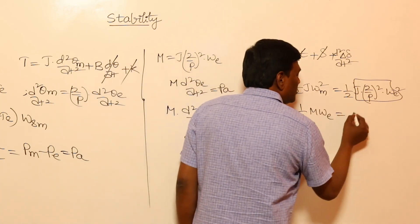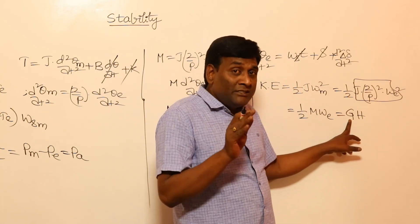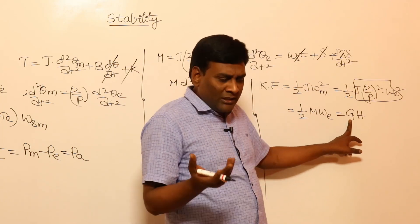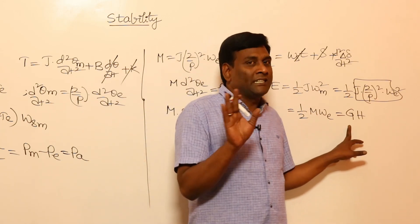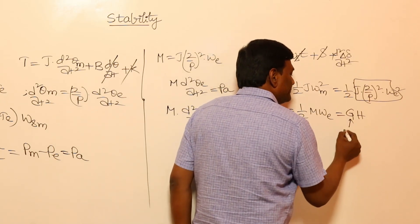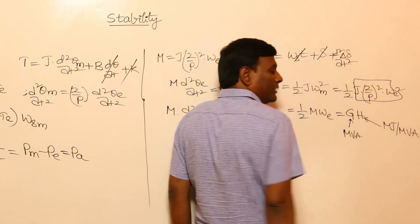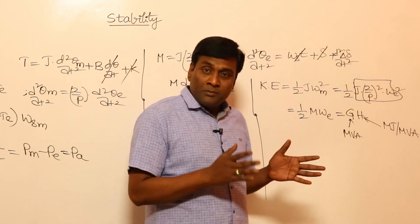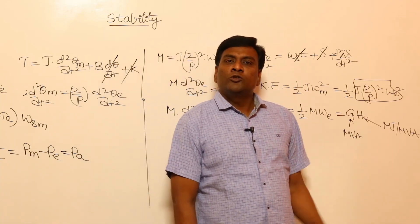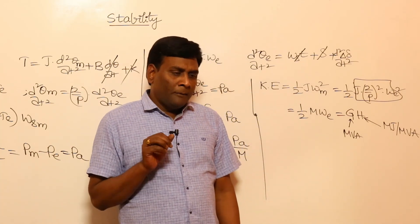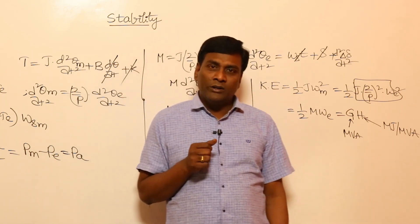G is the machine rating in MVA, and H has units of mega joules per MVA. Many textbooks use G instead of S for MVA rating — it is just a terminology difference. H is given in mega joules per MVA, and for any given synchronous machine, the datasheet typically provides H — for example, 3 mega joules per MVA — telling us how much kinetic energy is stored per MVA of capacity.